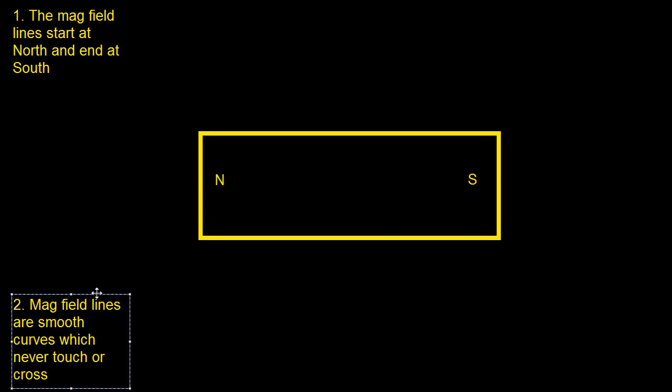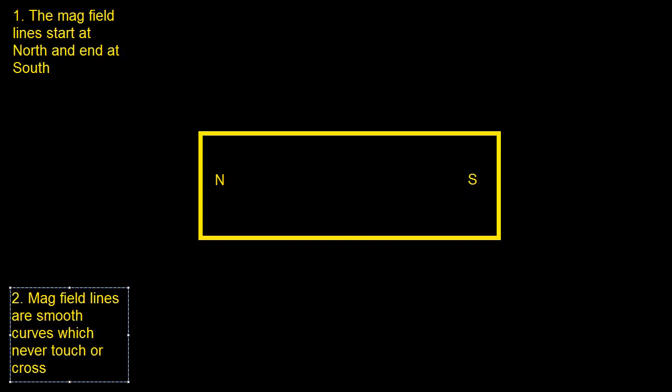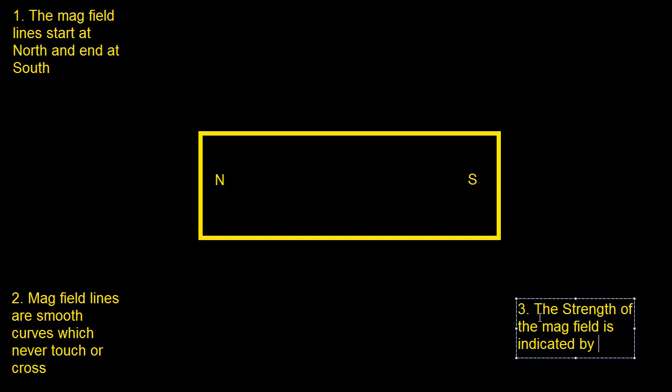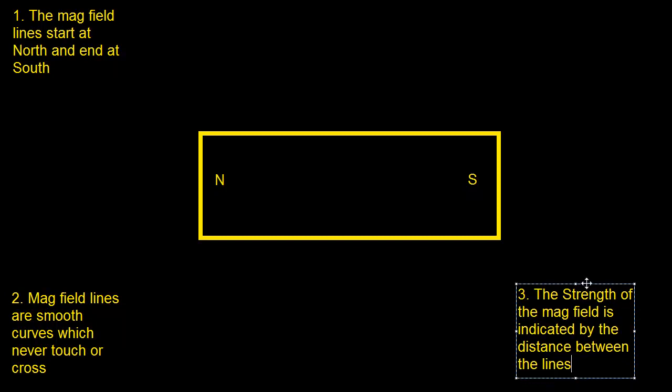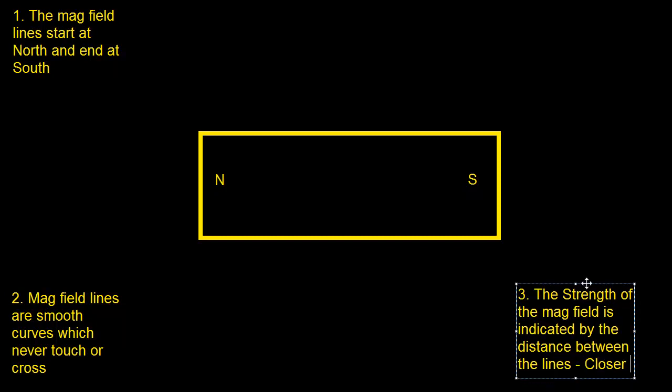Magnetic field lines are smooth curves which never touch or cross. And there's a reason for this, not just because it would look absurdly messy if they did touch or cross. But you will see that in point three. Point three is, the strength of the magnetic field is indicated by the distance between the lines. So this is kind of a really important one. Closer equals stronger.